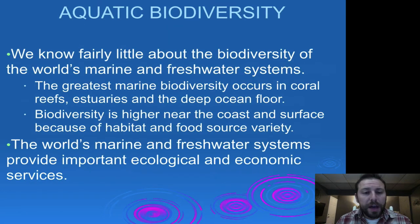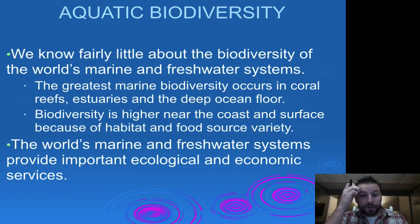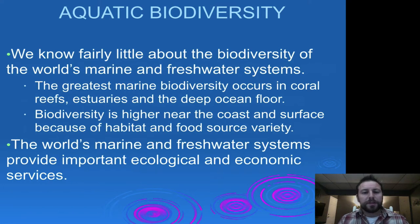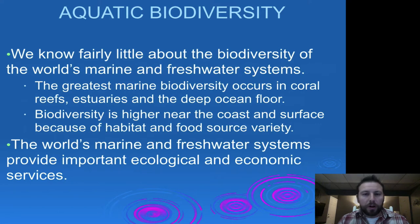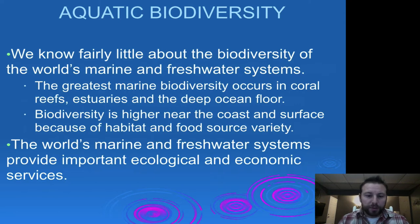As far as aquatic biodiversity, we don't really know much about those systems, especially our marine systems. The depth at which they go and the abundance of interconnectedness between the species and the environment is vast, and we're only touching the surface. We do know that biodiversity tends to be higher near the coast where there's usually more habitat and nutrients to support productivity, and that those pelagic regions at the top of the ocean are going to be more productive than as we go deeper down.